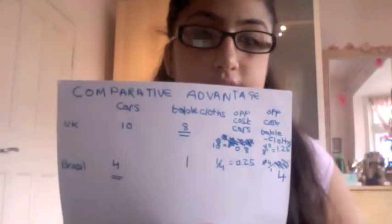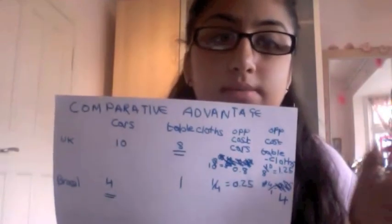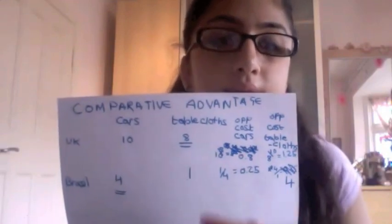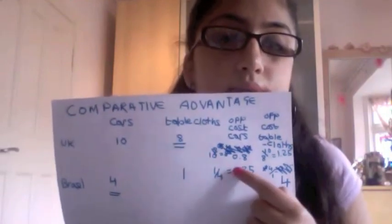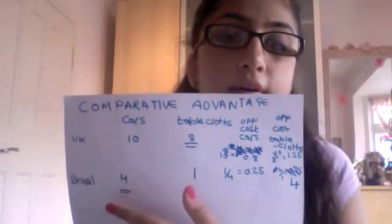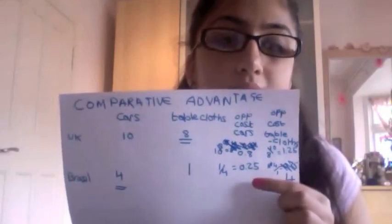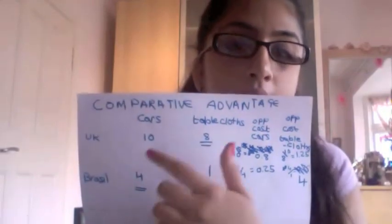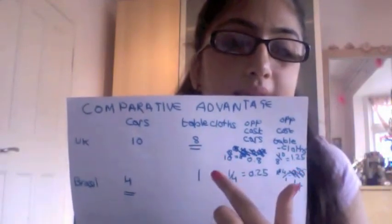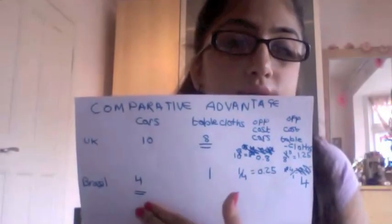Comparative advantage says: let's look at opportunity costs first. Opportunity cost is the cost of foregoing the next best alternative, calculated as total loss over total gain. The opportunity cost of producing cars in the UK is the loss of 8 tablecloths over the gain of 10 cars, which equals 0.8. The opportunity cost of cars in Brazil is 1 tablecloth over 4 cars, which equals 0.25. Brazil has a lower opportunity cost than the UK — the UK foregoes far more tablecloths — so Brazil should specialise in cars. For tablecloths, the UK loses 10 cars to gain 8 tablecloths, giving 1.25, while Brazil loses 4 cars for 1 tablecloth, giving 4.